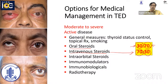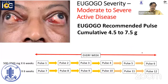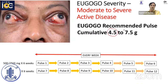Immunomodulators and immunobiologicals are the next line in therapy. Immunobiologicals may come in as primary therapy over a period of time. And there is radiotherapy. This is the EUGOGO recommended pulse intravenous methylprednisolone therapy, where the cumulative dose is either 4.5 grams or 7.5 grams, depending on the activity.